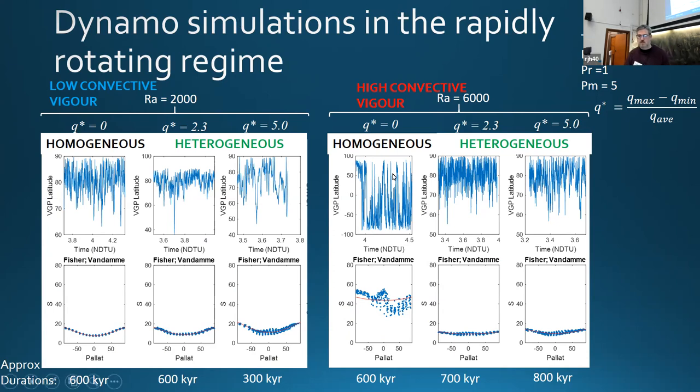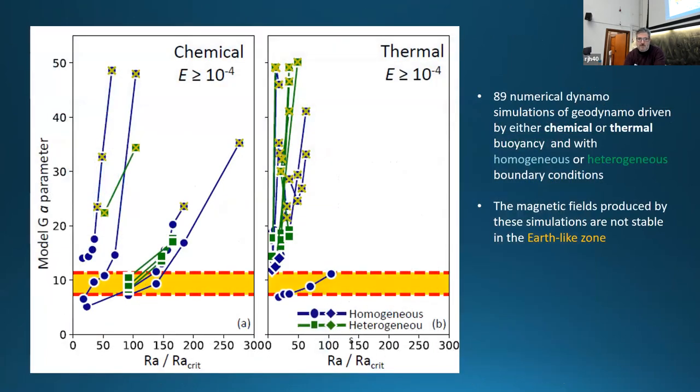The paleosecular variation is like nothing we've seen, but exactly the same model with the heterogeneity on suddenly starts behaving itself well. To show most models do not achieve this when they run at higher Ekman number, this is the earth-like golden zone here. Many of these models do not enter this zone, but even if they do, you increase the Rayleigh number a little bit and they leave it again.